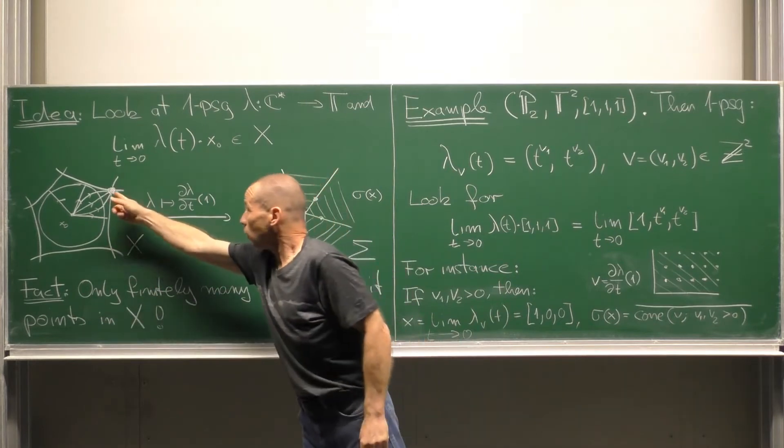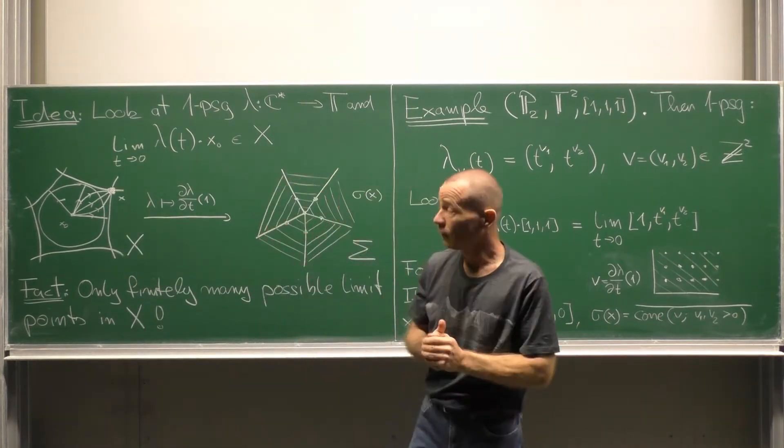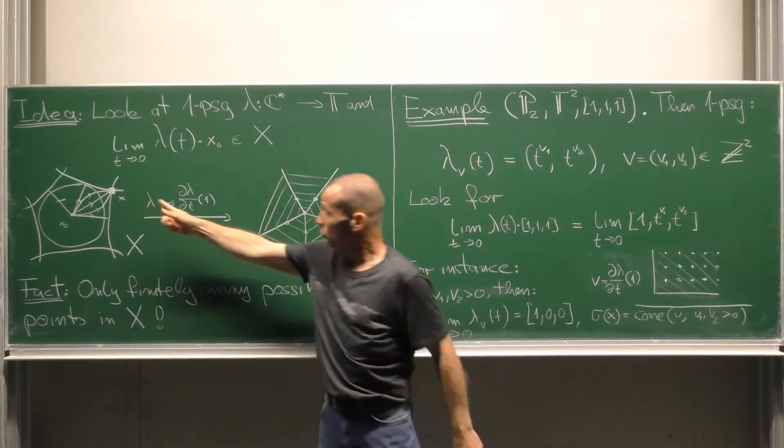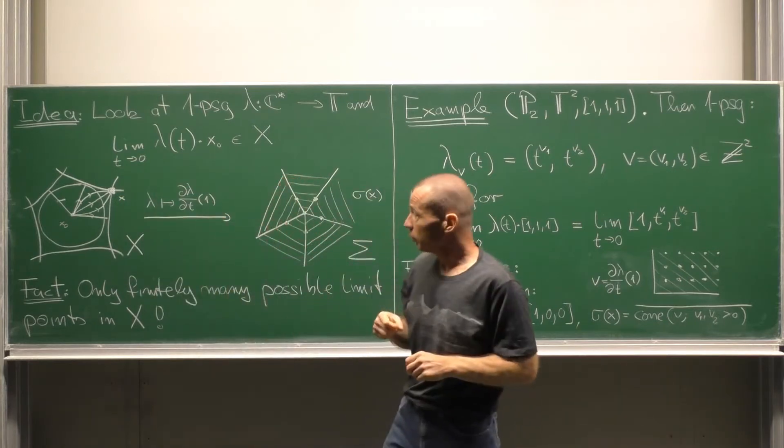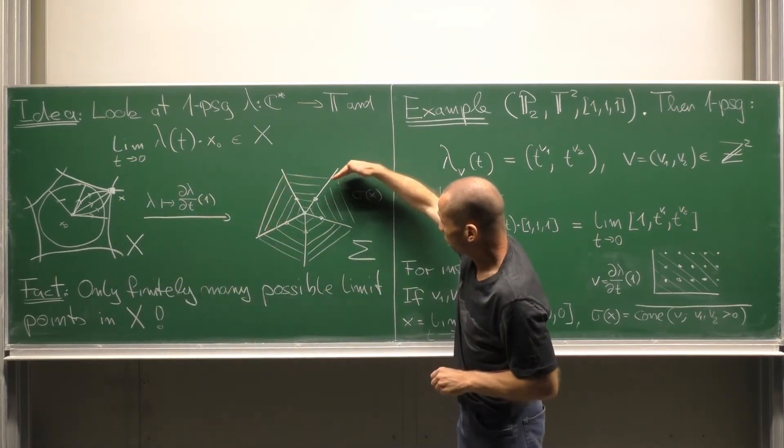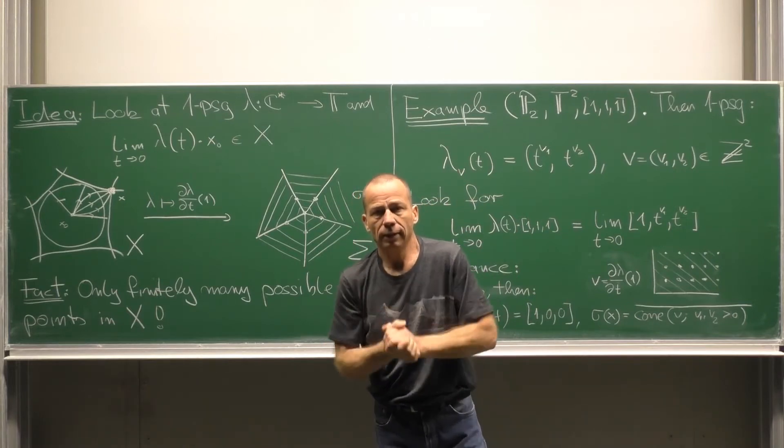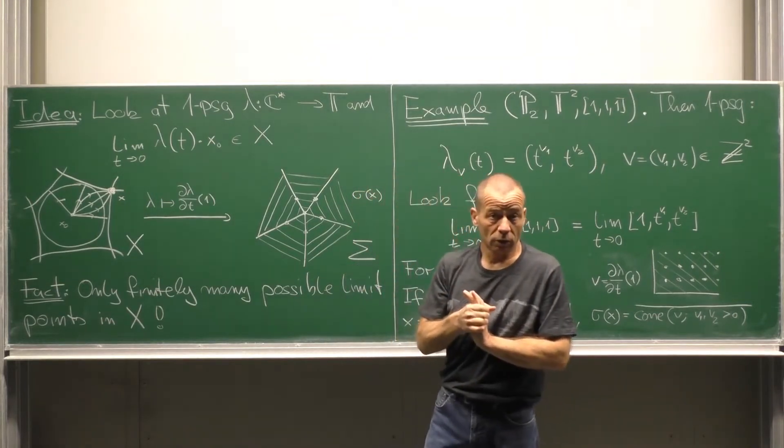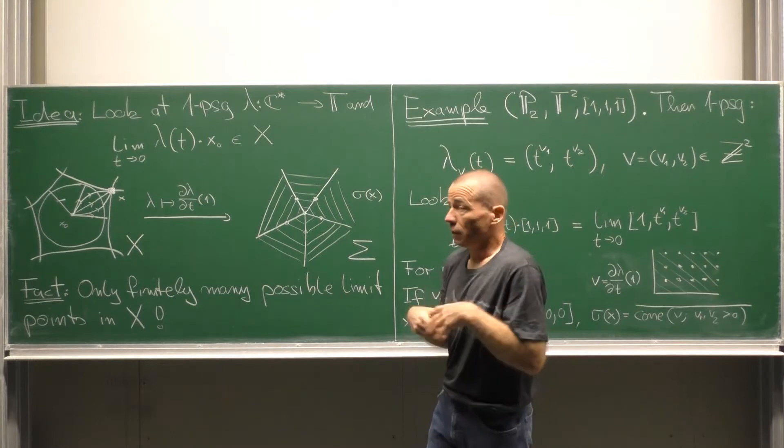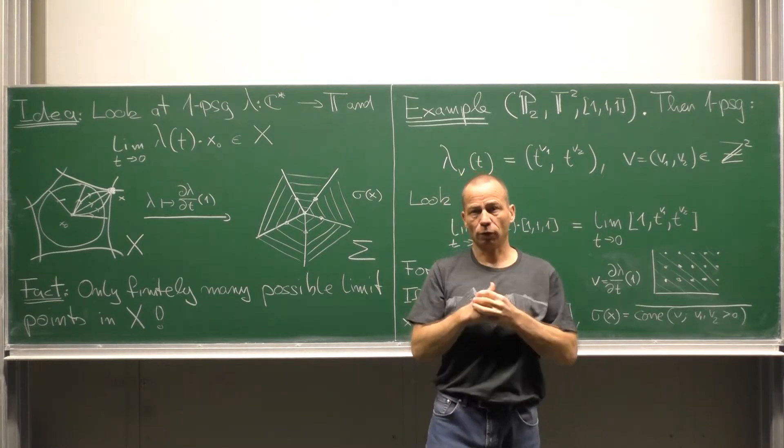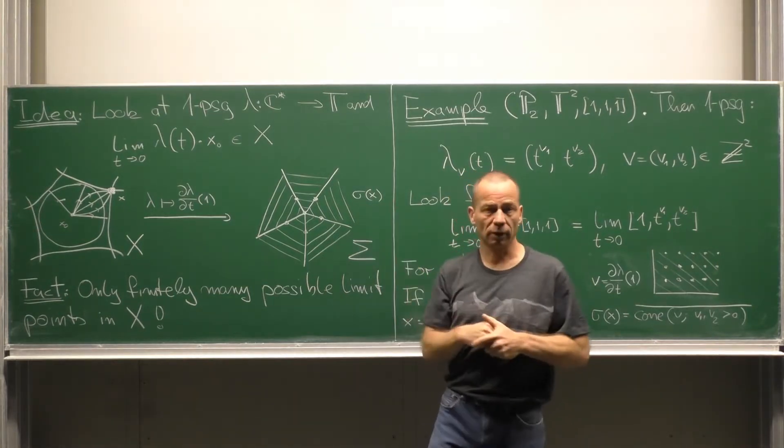Now if we look at all directions of the one parameter subgroup ending up in this limit point X, then we observe that all these directions they lie inside an open cone. And if we pass to the closure of this cone then we obtain a lattice cone.